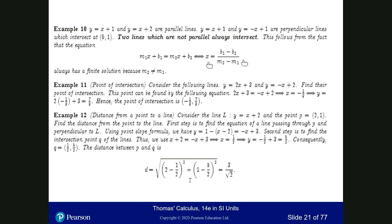For the two lines y equals x plus 1 and y equals minus x plus 1, what's the point of intersection? If you equate them, x is equal to zero is the x-coordinate. When x equals zero, y equals 1 for both cases. So they intersect at point (0, 1). This verifies that if you have two lines which are not parallel, they always intersect.